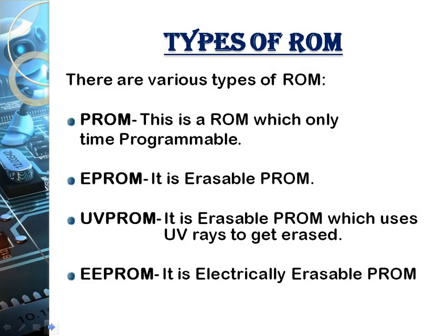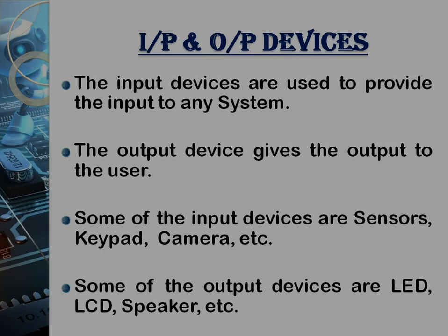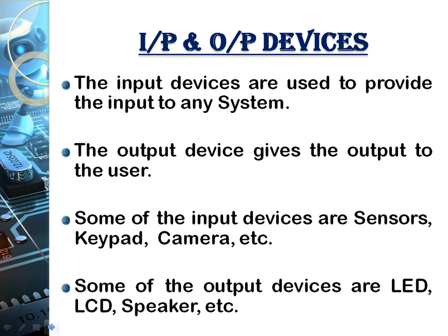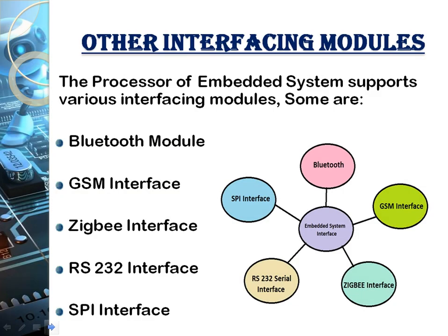Types of ROM include EPROM (Erasable Programmable ROM), UV-PROM (Ultraviolet PROM), and EEPROM (Electrically Erasable Programmable ROM). Input devices you can connect to an 8051 include sensors, keypads, cameras, and switches. Output devices include LEDs, LCDs, and speakers.